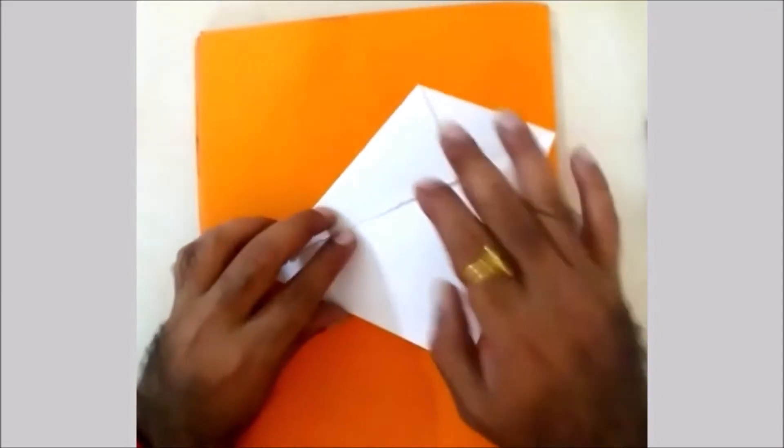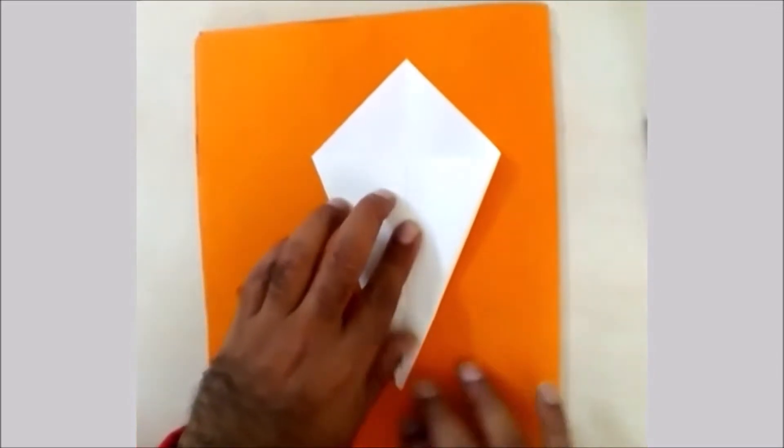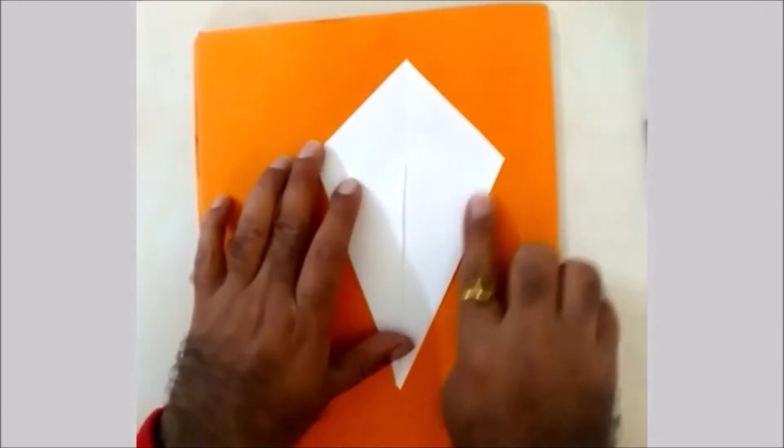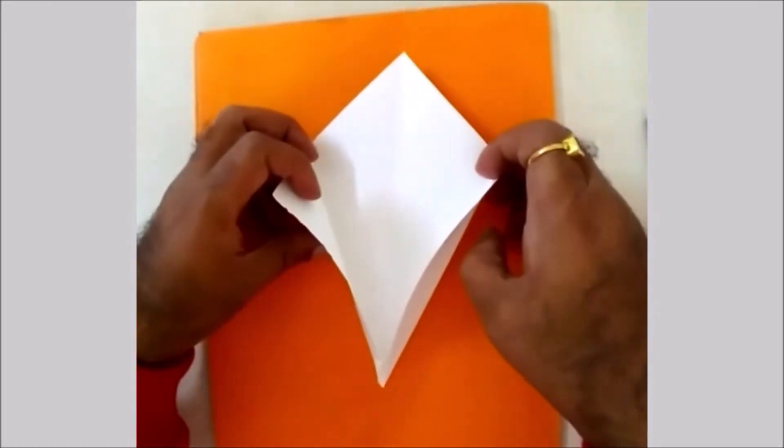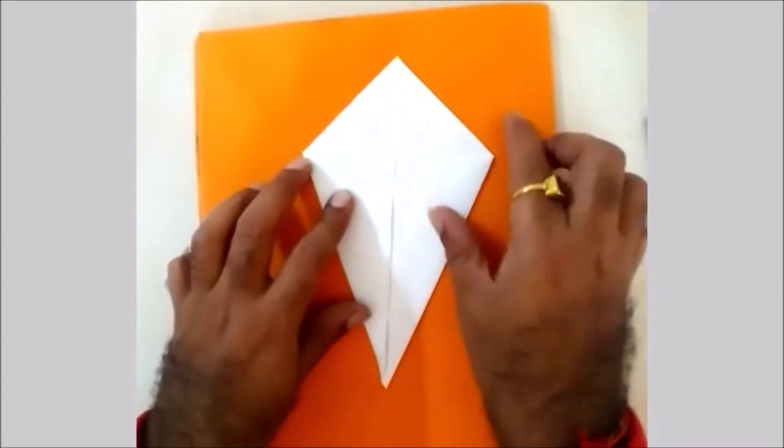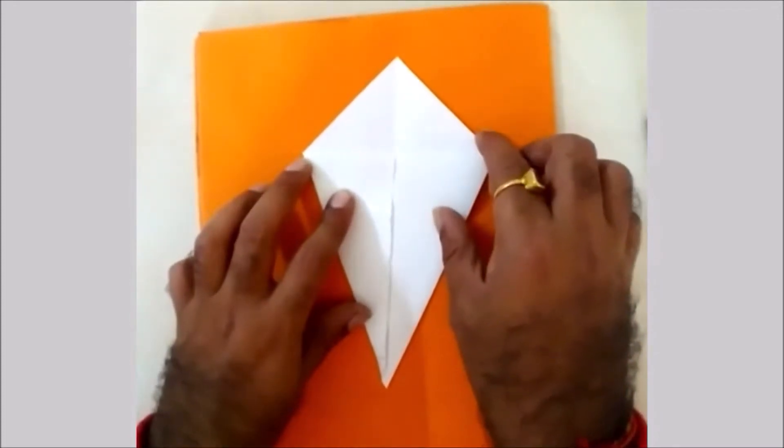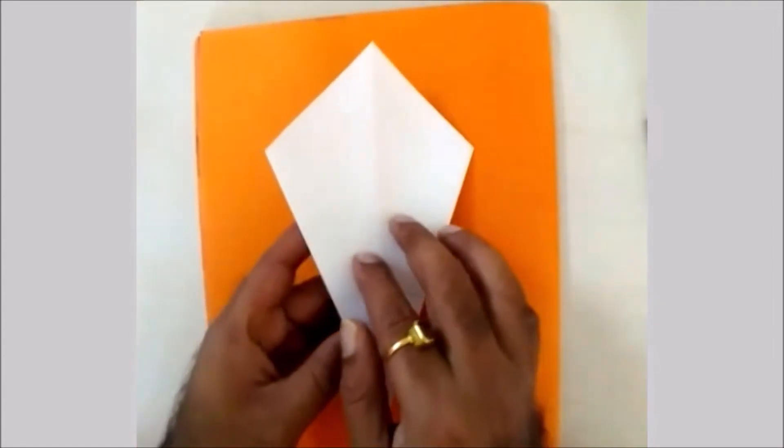Again same on opposite side. Now here two wings have been folded up to the center line. Now turn it to the backside portion.